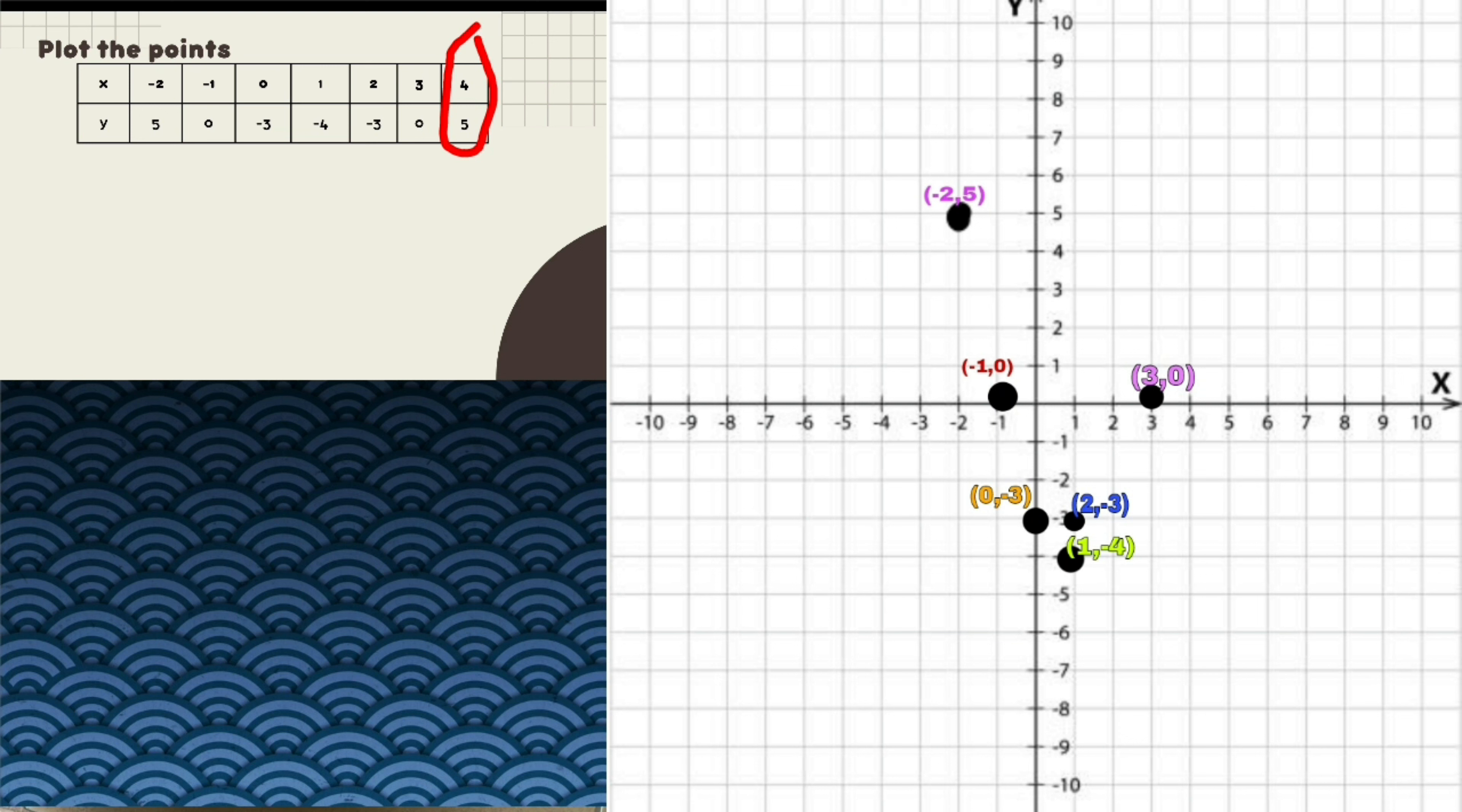And last one is 4 and 5. Our x is 4 and y is 5. So this is plotted here, which is in quadrant 1. And after we plot everything...